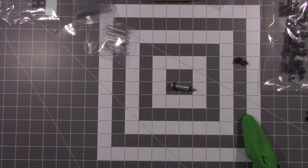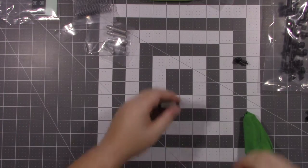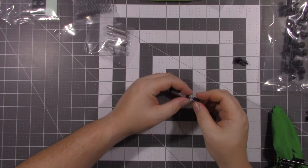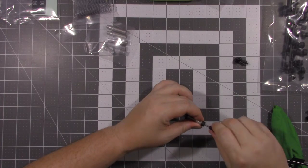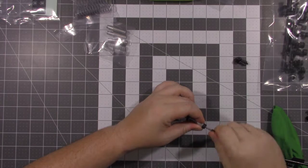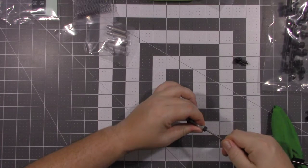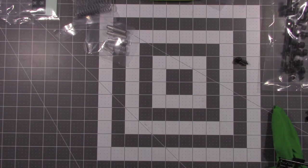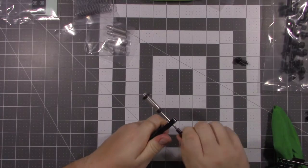Now you take your rod end and get it started on there. Once you get a few threads tightened down, pull the shaft on out and go ahead and tighten this down.